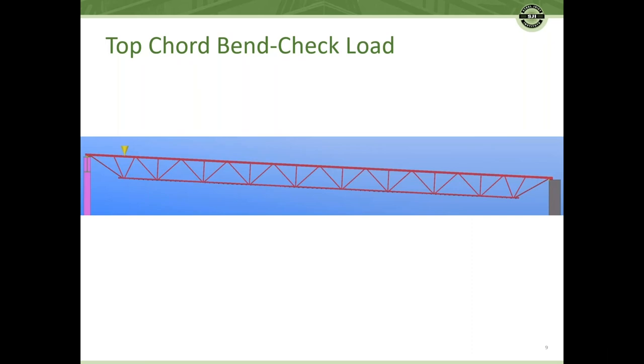Again, a number of load cases are generated for the magnitude of the bend check load, resulting in the largest member stresses to the top cord of the joist between panel points. Bend check loads can also be applied to the bottom cord and the worst case condition is determined.